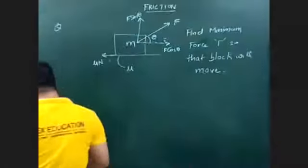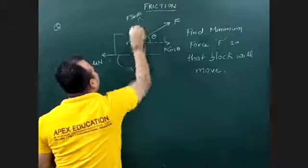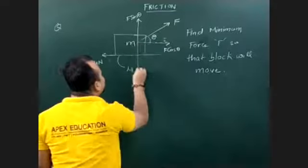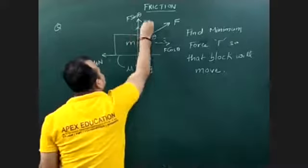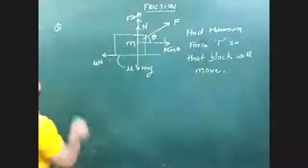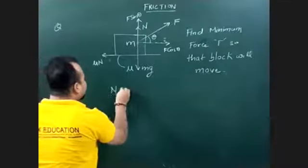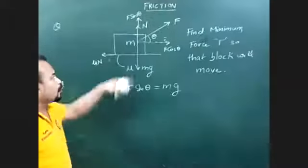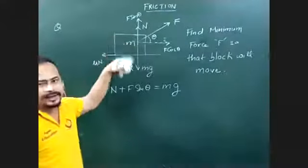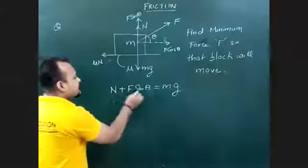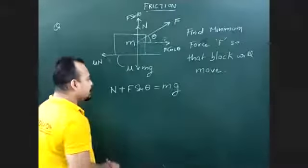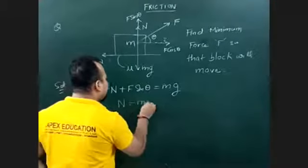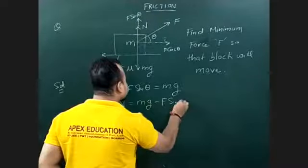If the normal force is reduced, then the friction force will be reduced and you will need less applied force. The forces in the vertical direction are: the upward component is F sinθ, and the downward force is mg. The block is not moving vertically, so N plus F sinθ equals mg. Removing N: N equals mg minus F sinθ. This is our normal force.